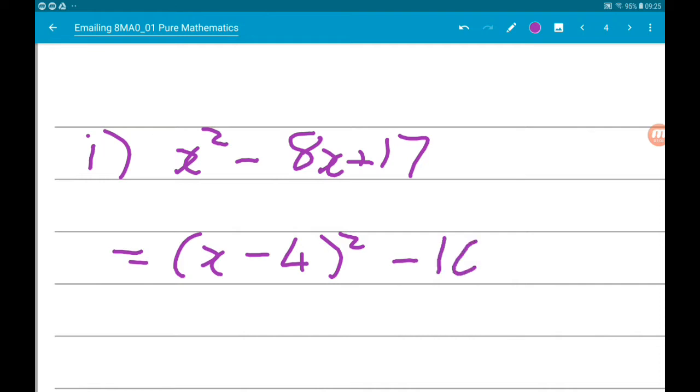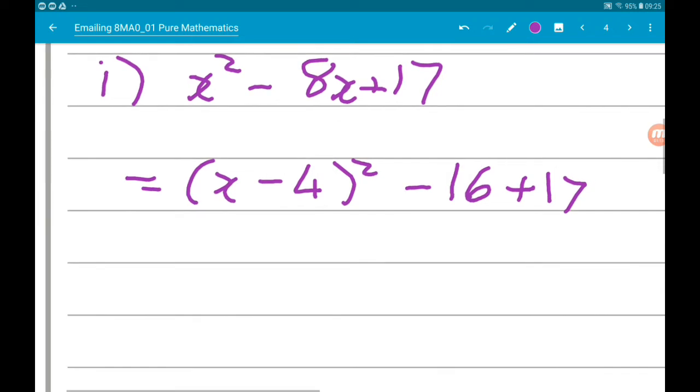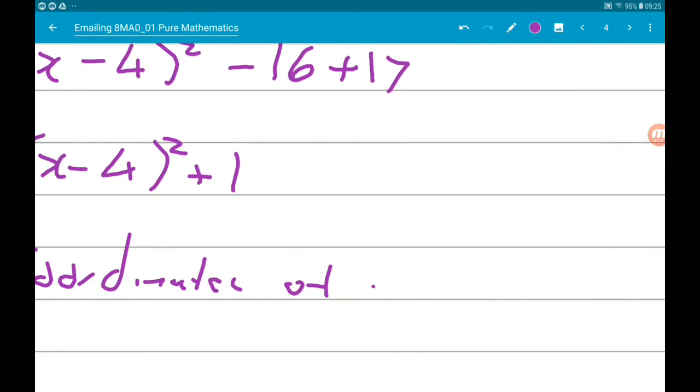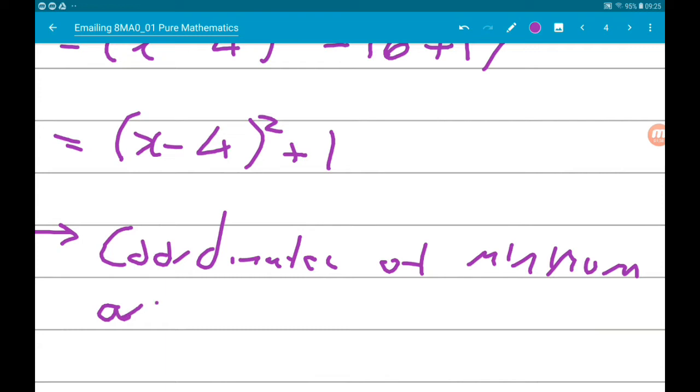So this is x minus 4 squared plus 1. Now that means the coordinates of the minimum are 4, 1.